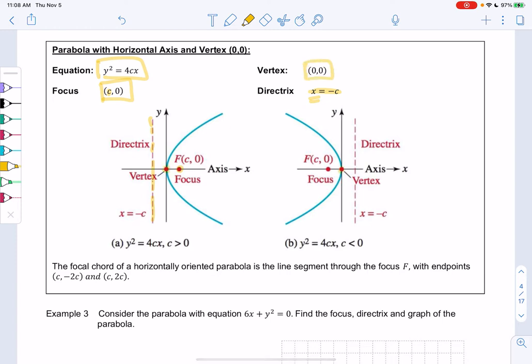So it should feel really similar, just we're going horizontally rather than vertically. And then those points on the focal chord are now (c, -2c) and (c, 2c). So you'll notice the focus matches the x value on those.